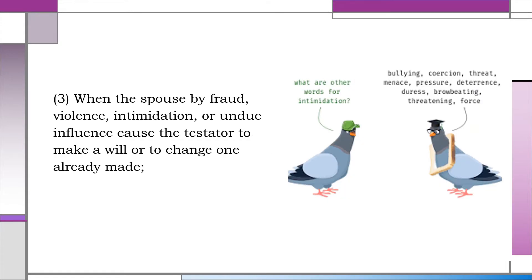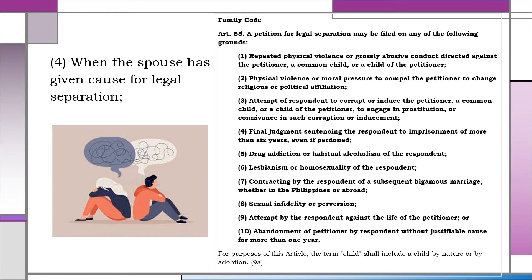Number three, when the spouse, by fraud, violence, intimidation, or undue influence, caused the testator to make a will or to change one already made. Again, this cause is common with Articles 919 and 920, and had been discussed under those articles.